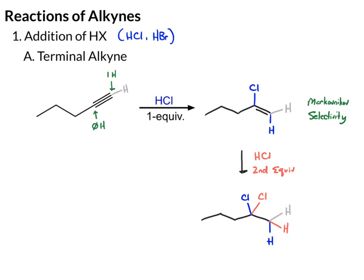If you want to stop at the chloroalkene, you just use one equivalent of acid. If you want the dichloroalkane, you use two equivalents of acid. Or a simpler way to do this is just use an excess of acid — you can write this as HCl, 2 equivalents, or HCl excess, which is just an abbreviation for excess. Both will give you the same final product.